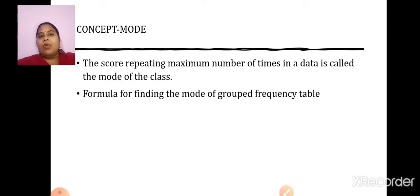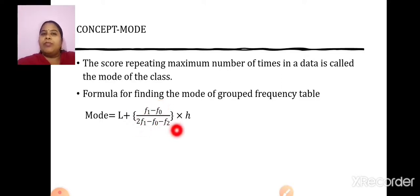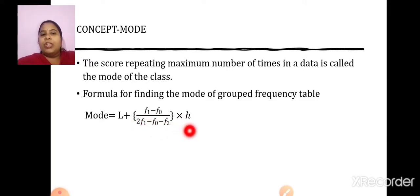This is what we are going to learn in this session. The formula is: Mode is equal to L plus F1 minus F0 upon 2F1 minus F0 minus F2, into H. Do not worry, it is not difficult. Starting with F1 minus F0, then 2F1 minus F0 minus F2 into H — this is the formula to be remembered for Mode.